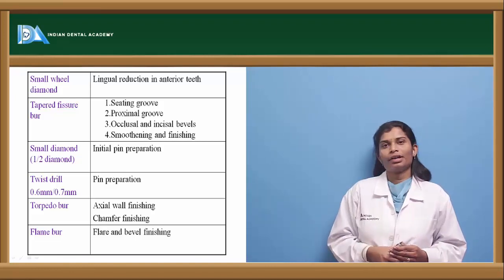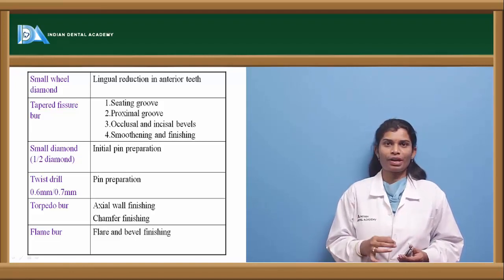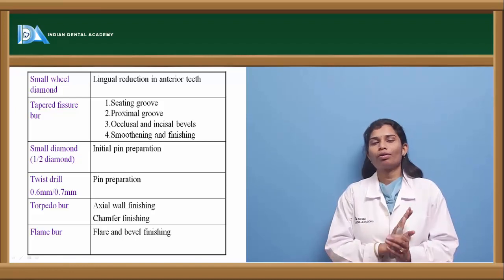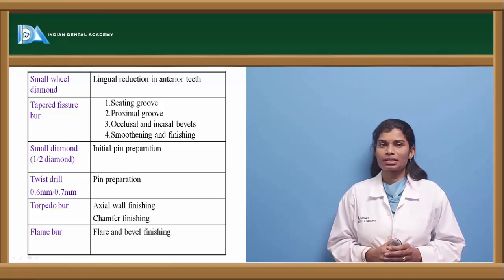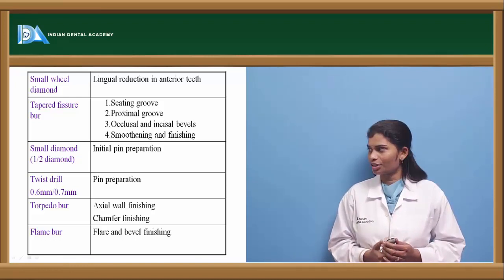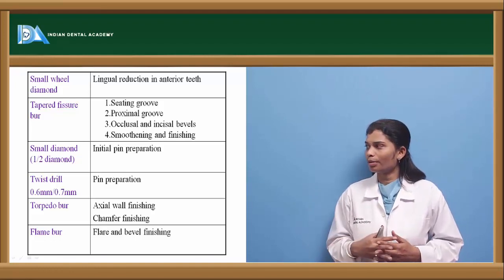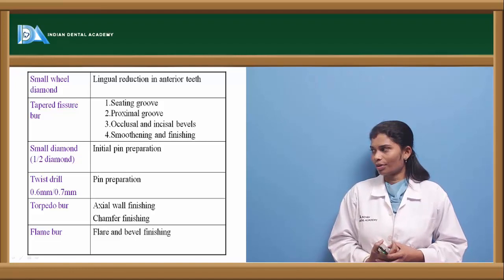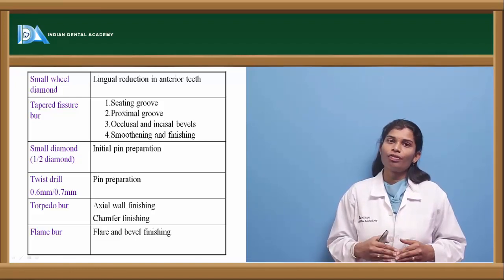A small diamond is helpful in pin preparation, adding a retentive feature on the finish line since only part of the tooth structure is being prepared. A twist drill is also important in pin preparation. A tapered bur helps in axial wall reduction and chamfer placement. A flame bur is used for flaring and finishing of a bevel.